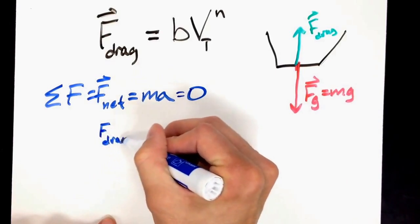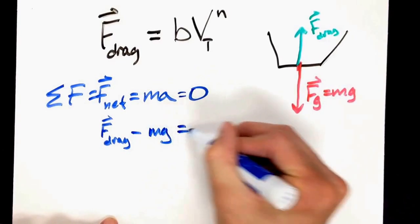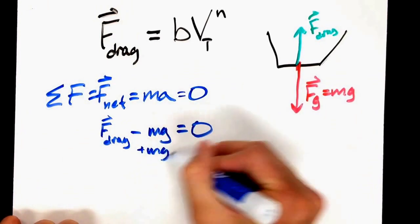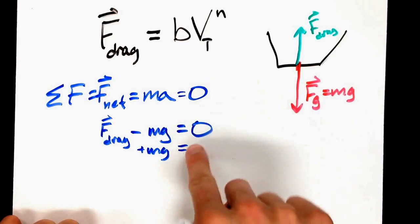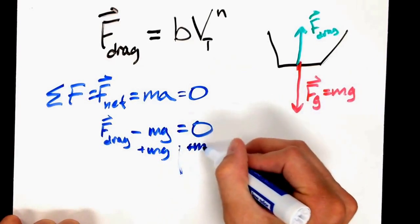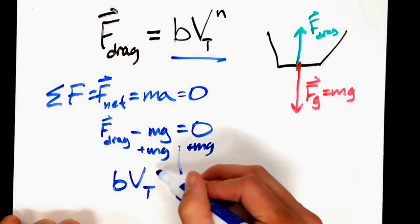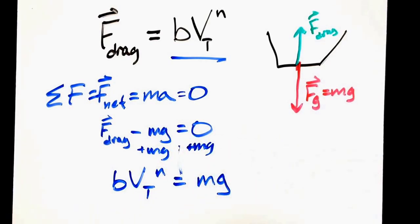In other words, drag force minus weight equals zero. The two are equal to each other. That being said, we can set bV_T^n equal to mass times gravity.